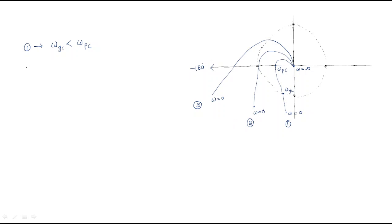For the second plot, starting from frequency 0 and continuing, it touches the unit radius at one point — that is the gain crossover frequency — and also touches minus 180 degrees, which is the phase crossover frequency. For the second plot, gain crossover frequency and phase crossover frequency are both the same.